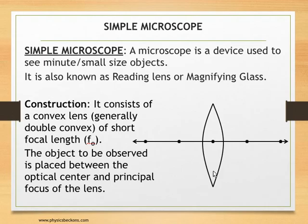So far as its construction is concerned, it is just a convex lens of short focal length, normally a double convex lens is used. f₀ denotes the short focal length of this lens. The object which we wish to observe is placed between optical center and principal focus of the lens.